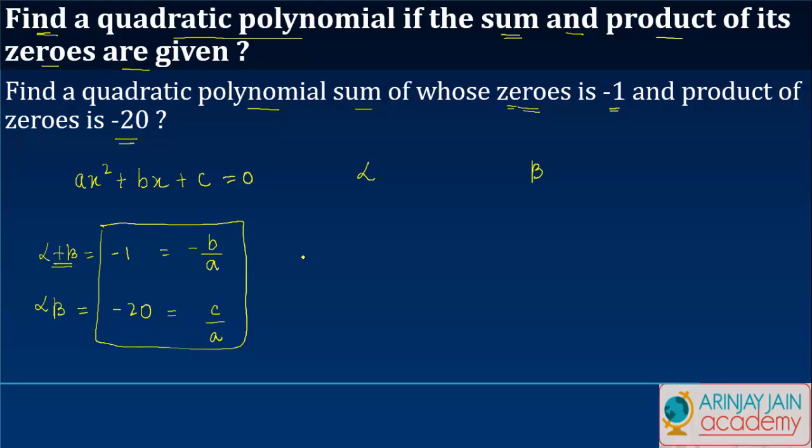In other words this gives us that minus b is equal to minus a, or b is equal to a. Similarly c is equal to minus 20 a.